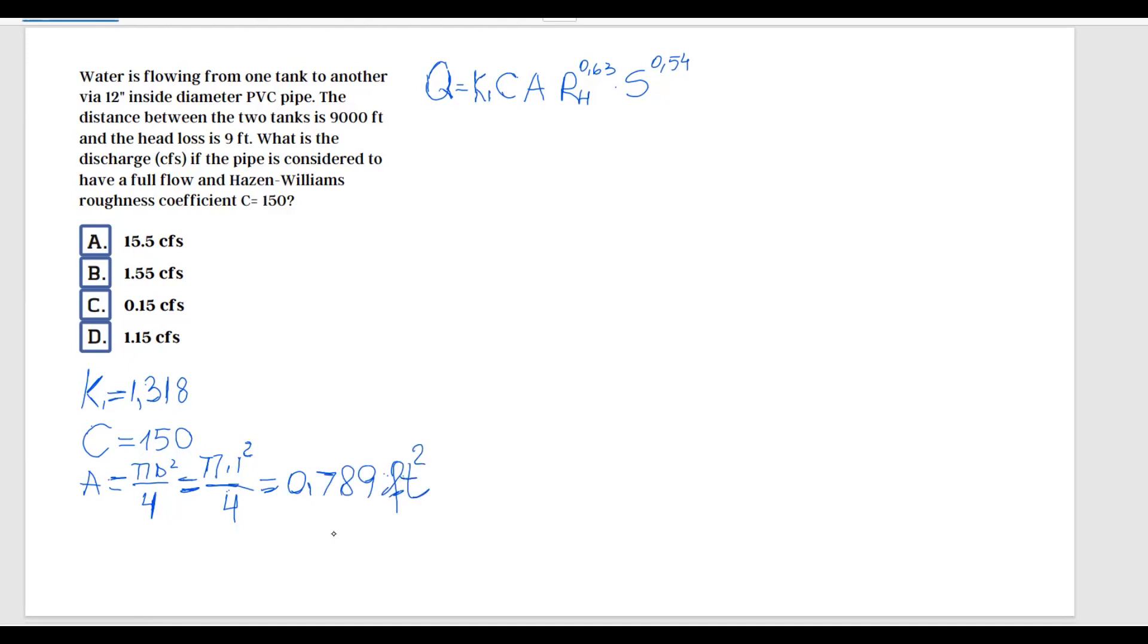Next we have the hydraulic radius. The formula for hydraulic radius is area divided by wetted perimeter. I'm going to write the formula even though we have calculated the area, and there's a reason why. The area is πD²/4 and the wetted perimeter is πD. Look at this: π and π go away, and then the diameters cancel, so the hydraulic radius for a circular shape is diameter over 4.